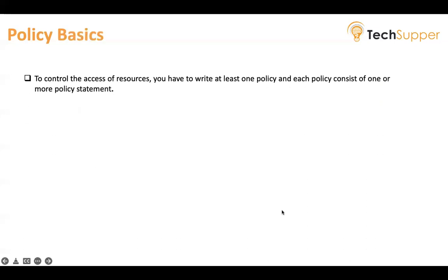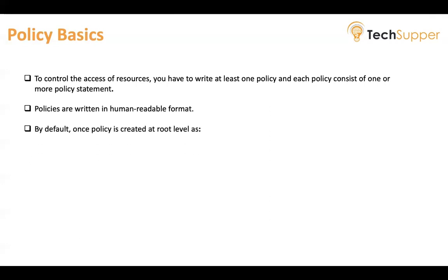To control access to resources, we have to write at least one policy. For example, we have created a group and assigned multiple users — these users cannot do anything until you write a policy on the group and give permission to perform certain things on a compartment. Each policy consists of one or more policy statements, meaning a policy is a collection of multiple statements.